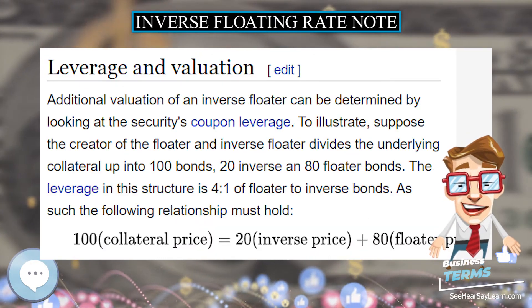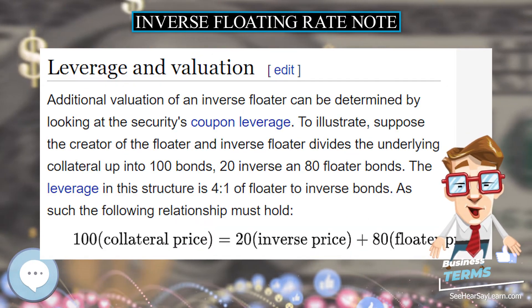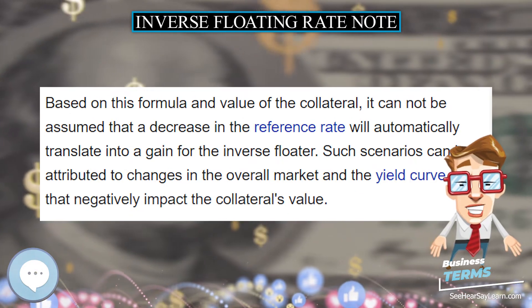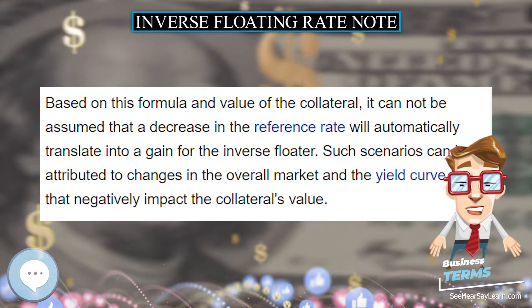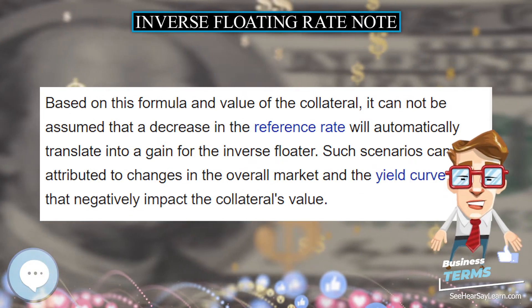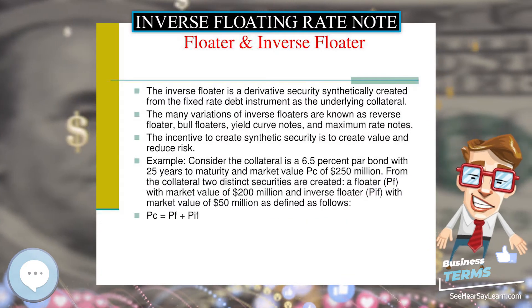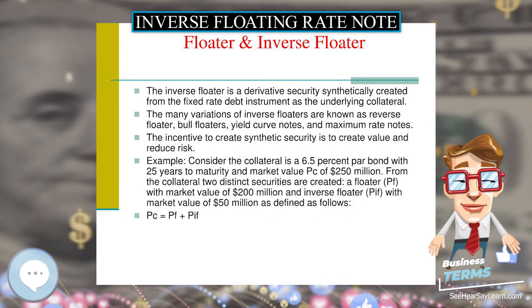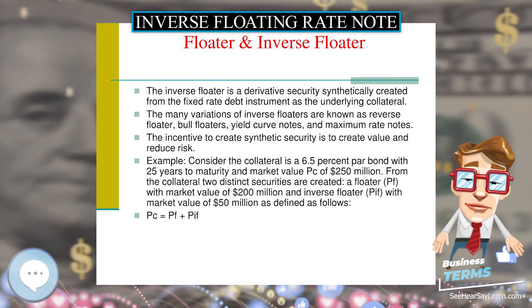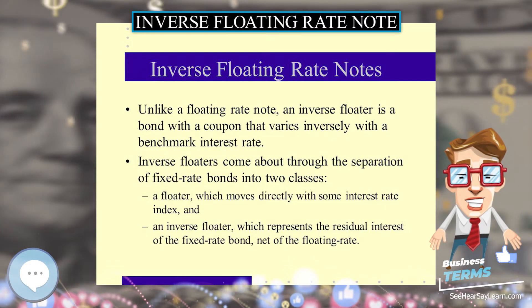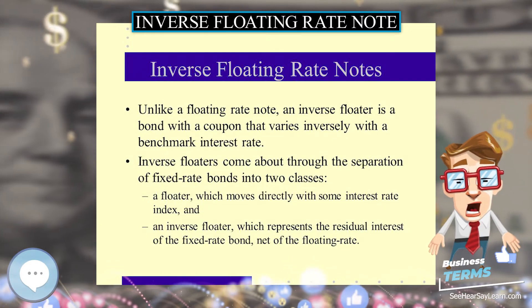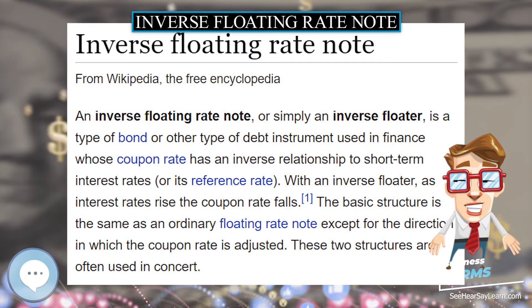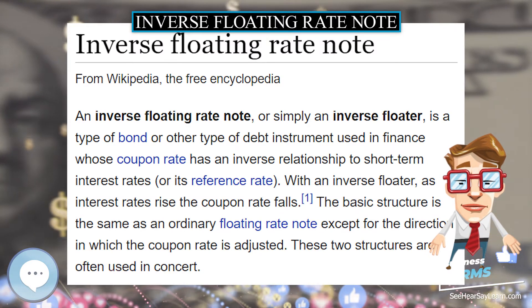Caps and floors are often placed within inverse floaters to avoid unattractive features to investors, such as a negative coupon. Typically, the floor is set at zero and a cap may be set at, for example, 10%. If a floater is involved, a cap is put on the floater to match up with the inverse's floor and vice versa, since both are derived from the same fixed-rate asset.